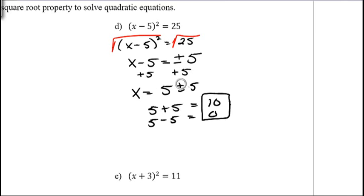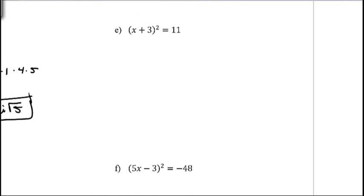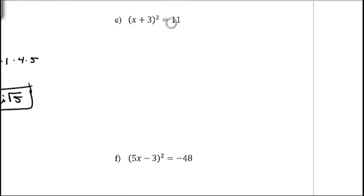Make sure you do these operations — 5 plus 5 to get 10, and 5 minus 5 to get 0. Don't leave your answer as 5 ± 5. Go ahead and pause the video and try this example: (x + 3)² = 11. It's just like the last one we did.